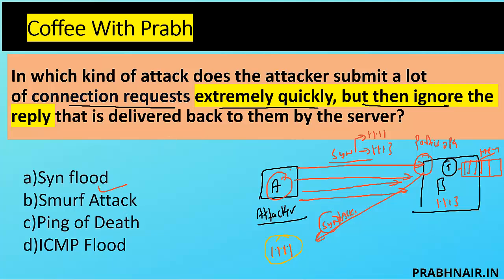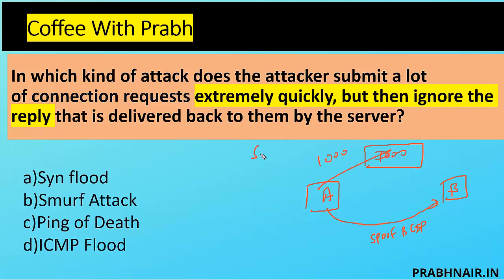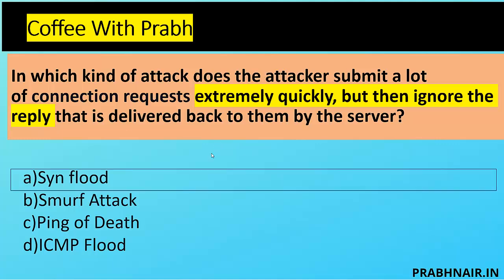In the SYN Flood attack, the attacker sends SYN but never acknowledges the SYN-ACK, because the spoofed source IP doesn't exist — B sends replies to non-existent hosts. This overflows B's memory with multiple SYN requests. The second option is Smurf Attack: attacker spoofs target B's IP, sends requests to 1000 hosts, and those hosts all reply to B, flooding B's resources. Ping of Death sends oversized ping packets; ICMP Flood sends ICMP packets. The closest answer is A — SYN Flood. Note: SYN Flood works on Layer 4 (Transport Layer) of the OSI model.